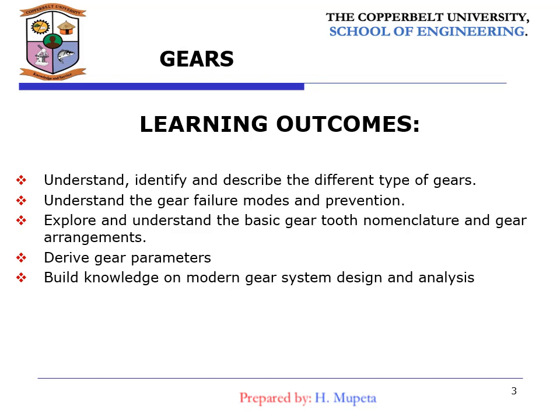The learning outcomes for this topic are: Number one, we are going to understand, identify, and discover different types of gears. We are going to understand gear failure and prevention, which was covered in the assignment. We are also going to explore gear tooth geometry and gear arrangements, then derive gear parameters, and build knowledge on modern gear system design and analysis.